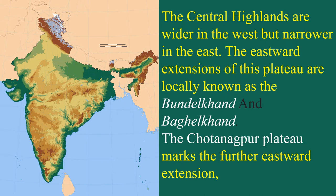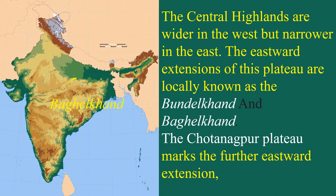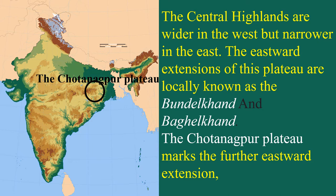The Central Highlands are wider in the west but narrow in the east. The eastward extension of this plateau is locally known as the Malwa Plateau. The Chhota Nagpur Plateau marks the further eastward extension of the Central Highlands, and it is a very rich minerals area.